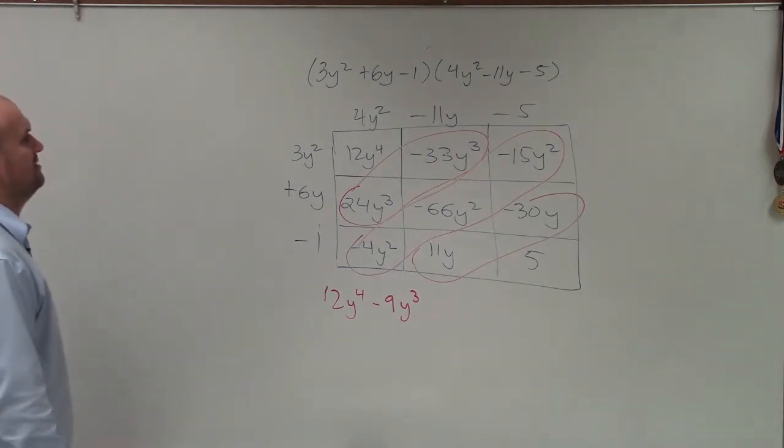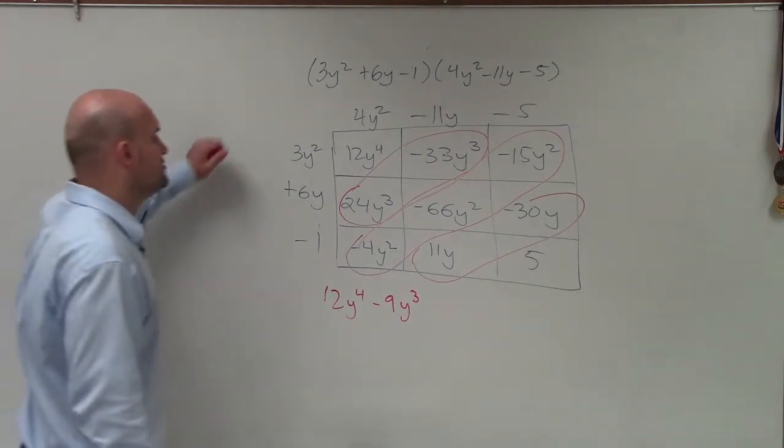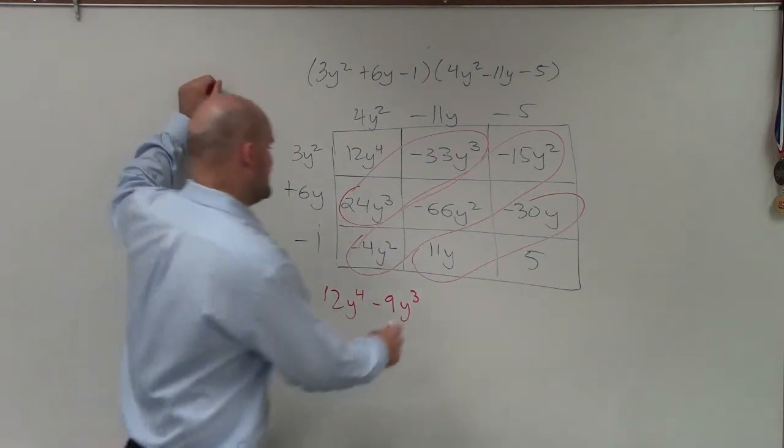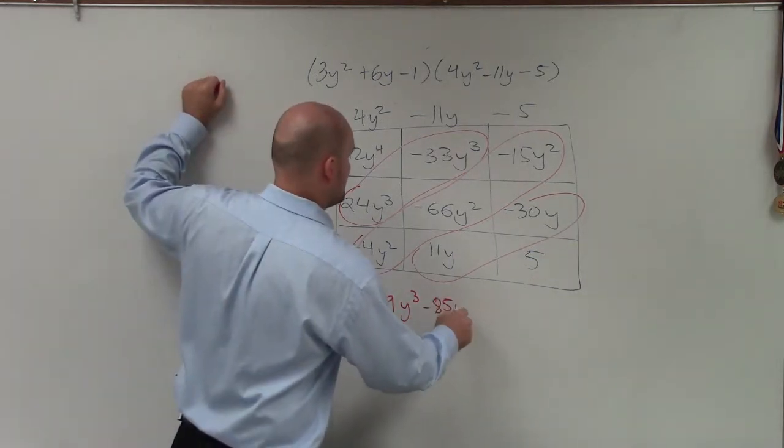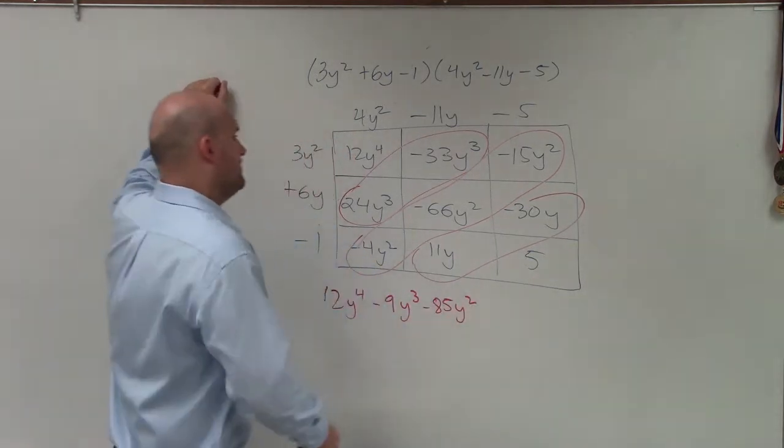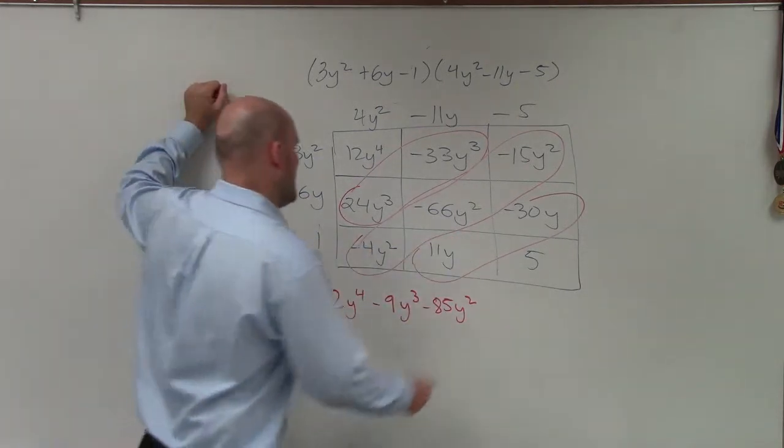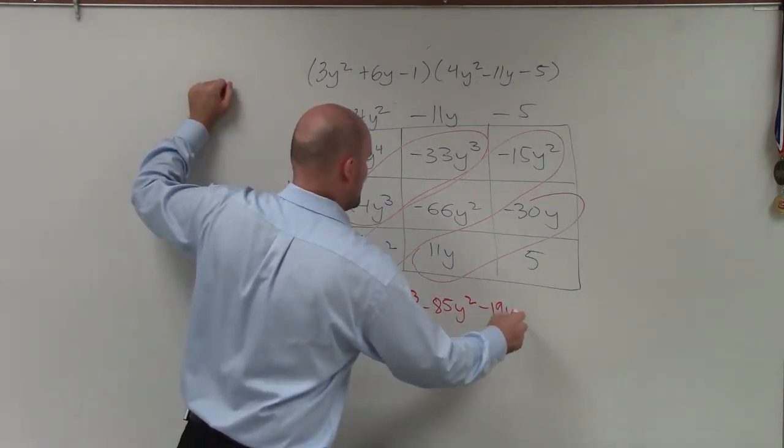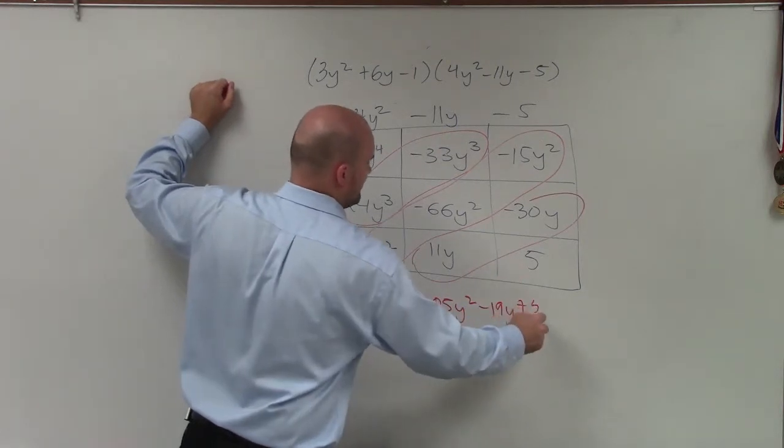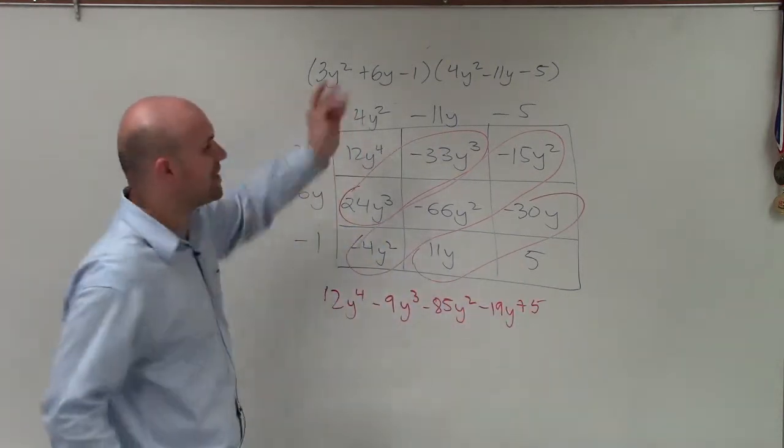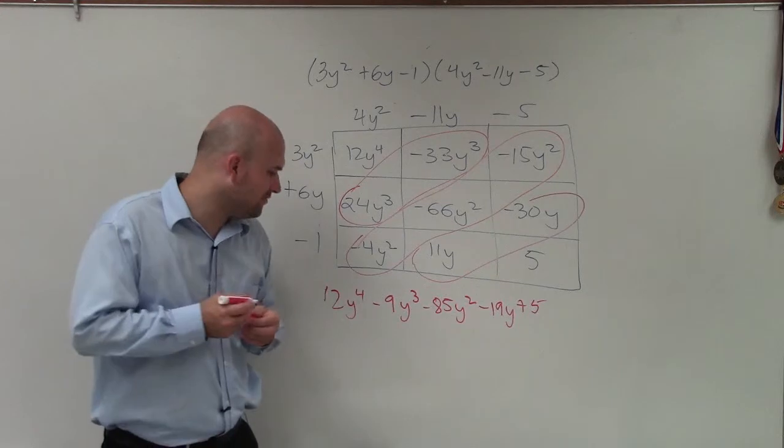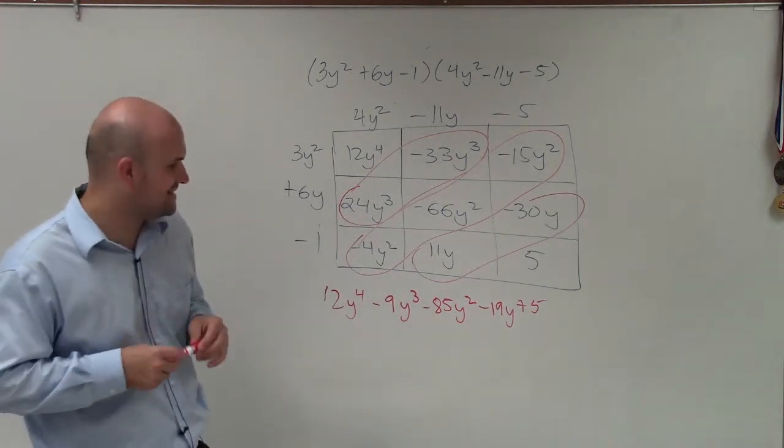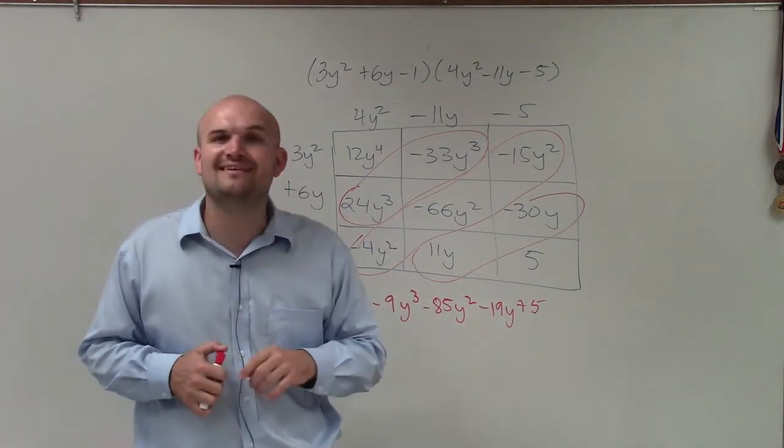And then now I've got to go ahead and combine all these. So that's going to be a negative. So they're all negatives. Yep, all negatives. So that would be 70—so that'd be -85y². Then I combine these two, which would be -19y. And then lastly is a positive 5. So therefore, the product of my two trinomials is 12y to the fourth minus 9y³ minus 85y² minus 19y plus 5.